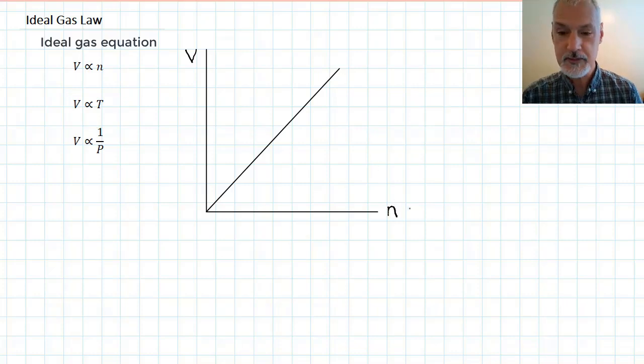Volume is also proportional to temperature, so it would give a similar graph with temperature on the side here. Volume, however, is inversely related to the pressure, meaning one over the pressure. So a graph of volume versus the other three variables would look as follows.